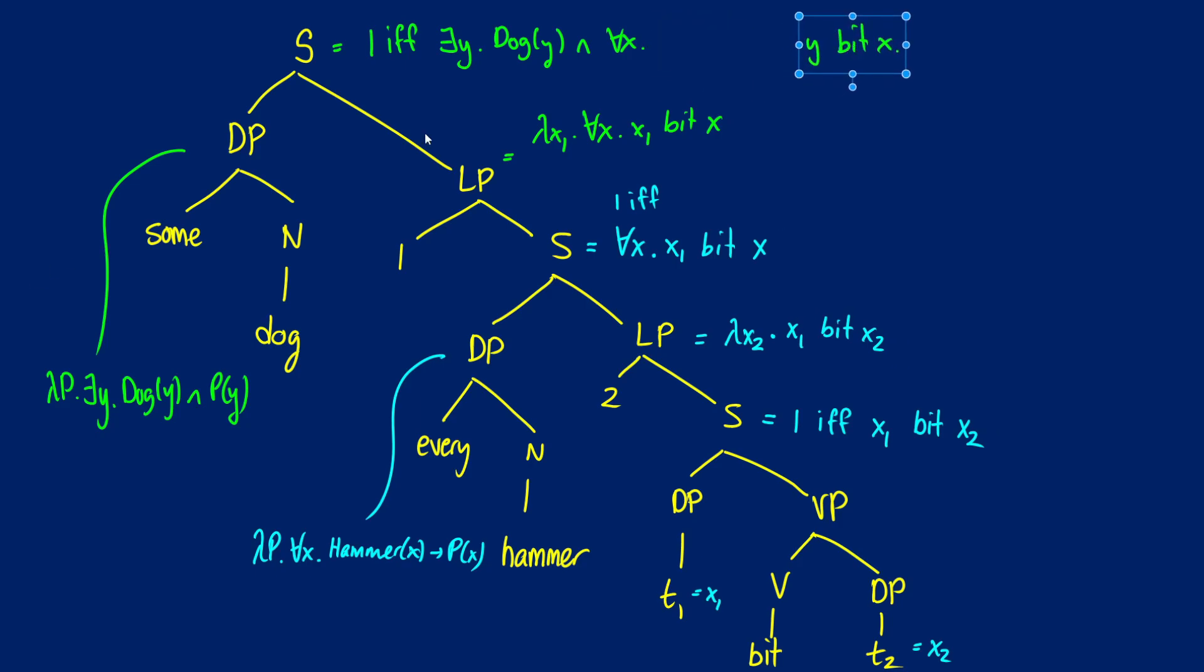We're not actually done here, because we have to put in that other information, that if X is a hammer, then Y bit X. We kind of used a mix of predicate logic and natural language to show this. But this is how we can do quantifier raising in lambda calculus.